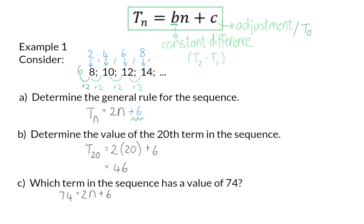Here we are going to solve a linear equation. So, I am going to start by subtracting 6 on the left-hand side. And when I divide both sides by 2, I can say that n is the 34th term in the row.